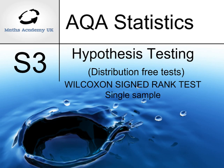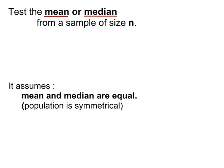Hypothesis testing, distribution-free tests. The Wilcoxon signed ranked test for a single sample. The Wilcoxon test can be used to test the population mean or median. It assumes the mean and median are equal, so the population is symmetrical.